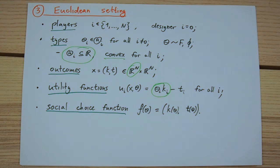This setting nests problems such as item allocation or public choice. In these problems, player's type theta i represents their valuation for the item or the project respectively, while the allocation k represents the probability of obtaining an item or the probability of the public project being implemented respectively.